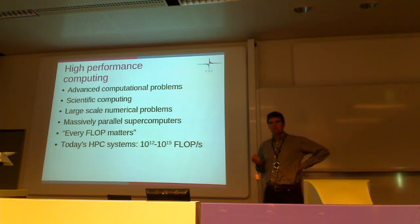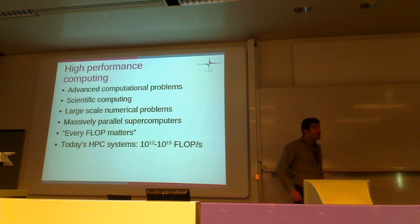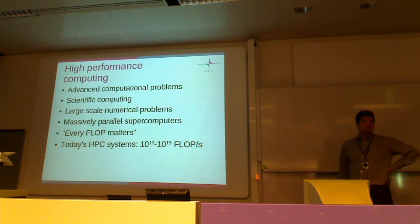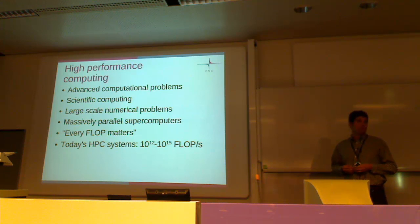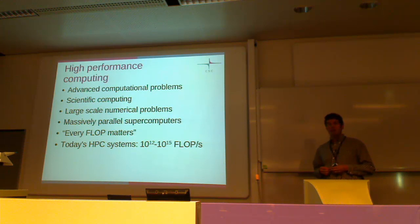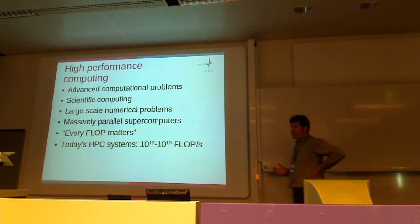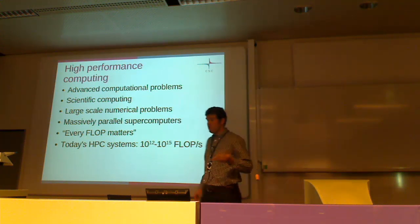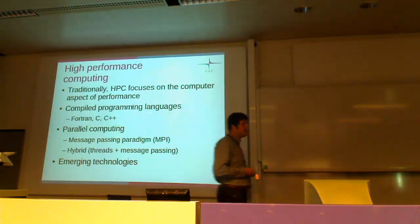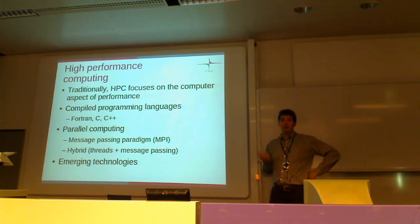What kind of computer systems are we speaking of? Nowadays, top-end computers are petaflop computers, meaning they can perform something like 10 to the power of 15 floating-point operations per second. In practice, this is achieved by using commodity processors, but just having tens of thousands of them. Using such a large number of processors naturally puts some challenges on how you actually have to do your programming.